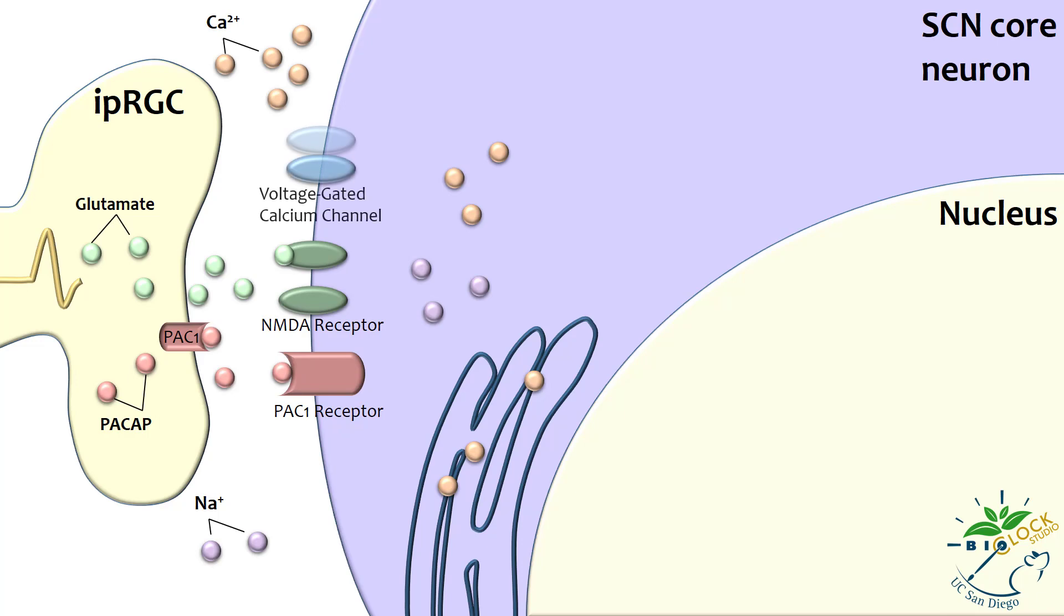The membrane depolarization activates voltage-gated calcium channels, which open to allow more calcium into the cell. At the same time, rising intracellular calcium levels activate ryanodine receptors on the endoplasmic reticulum, triggering the release of calcium from the endoplasmic reticulum into the cytoplasm.